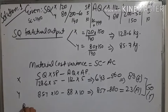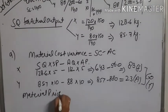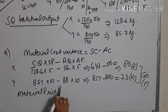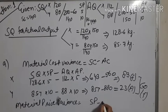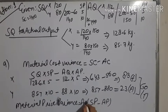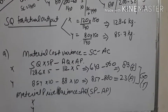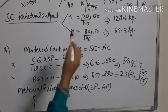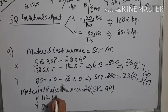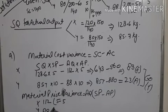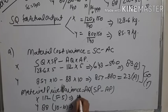Now we calculate material price variance as before. Material price variance equals (standard price minus actual price) multiplied by actual quantity, for both X and Y. Actual quantity is 112 for X and 88 for Y. Standard price is 5 and actual price is also 5 for X; for Y both are 10. Since prices are equal, the deduction is 0, so material price variance is 0.